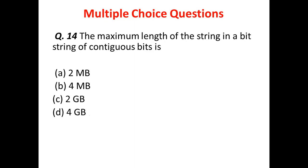Question 3: What is the maximum length of a string in a bit string of contiguous bits? Option A is 2 MB, Option B is 4 MB, Option C is 2 GB, and Option D is 4 GB. The answer is D — the maximum size of the string in a bit field string is 4 GB of contiguous bits.